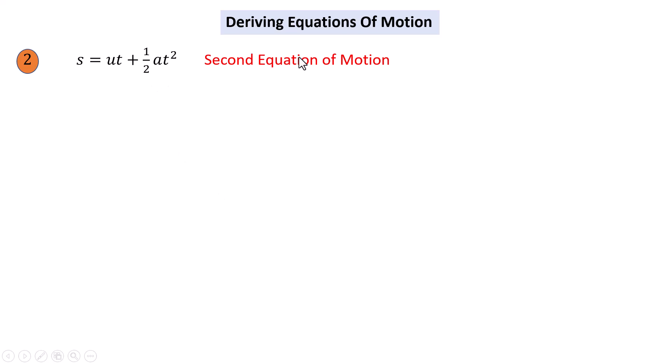Hi everyone, let's derive the second equation of motion by integration. We have s equal to ut plus one-half at squared.